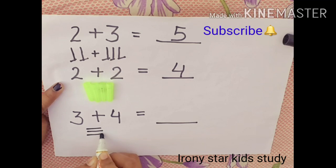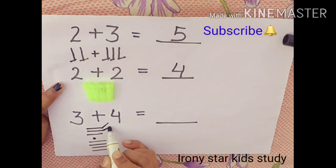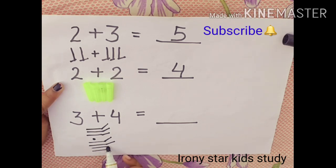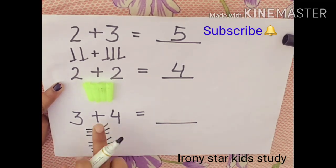1, 2, 3 and we will put the dot here, 1, 2, 3, and 4. And now we will add the lines. 1, 2, 3, 4, 5, 6, and 7. So here 3 plus 4, it will come 7.